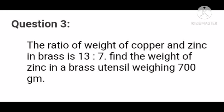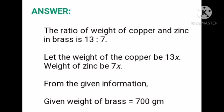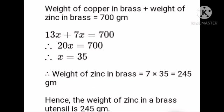Question number 3: The ratio of weight of copper and zinc in brass is 13 is to 7. Find the weight of zinc in a brass utensil weighing 700 grams. The ratio of weight of copper and zinc in brass is 13 is to 7. Let the weight of copper be 13x and weight of zinc be 7x. From the given information, the given weight of brass is 700 grams.